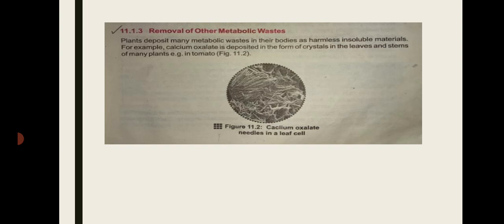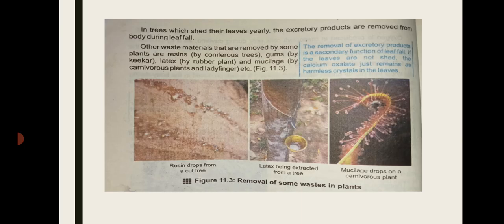Calcium oxalate is deposited as crystals inside the leaves and stem — for example, in tomato. Figure 11.2 shows calcium oxalate needles in a leaf cell. In trees which shed their leaves yearly, the excretory products are removed from the body during leaf fall.